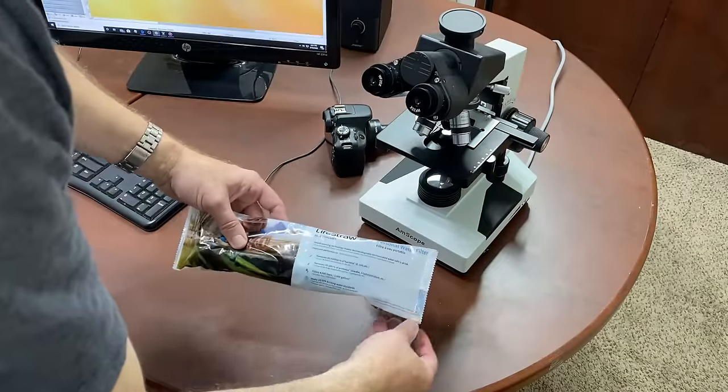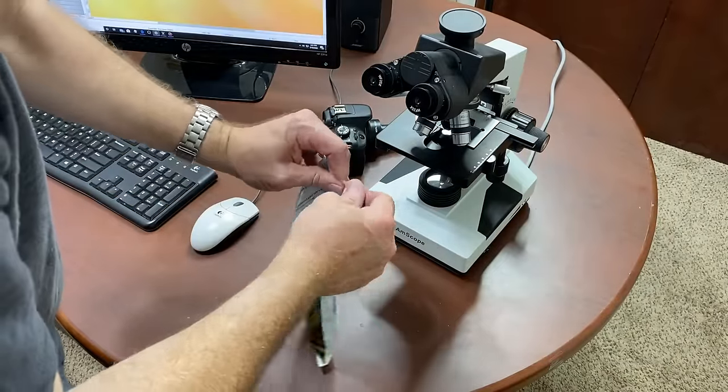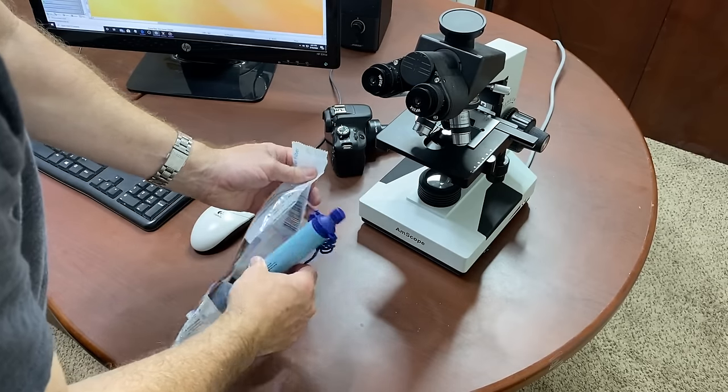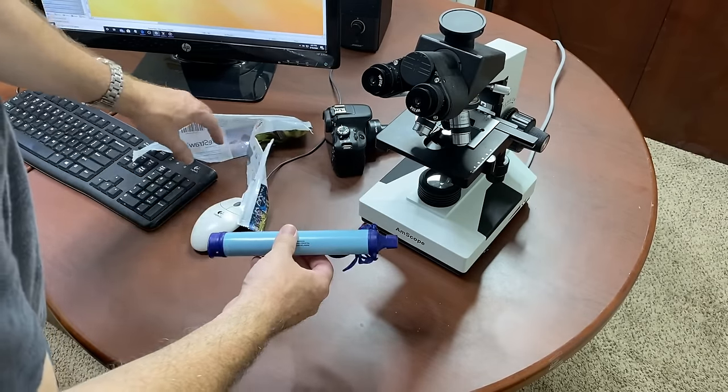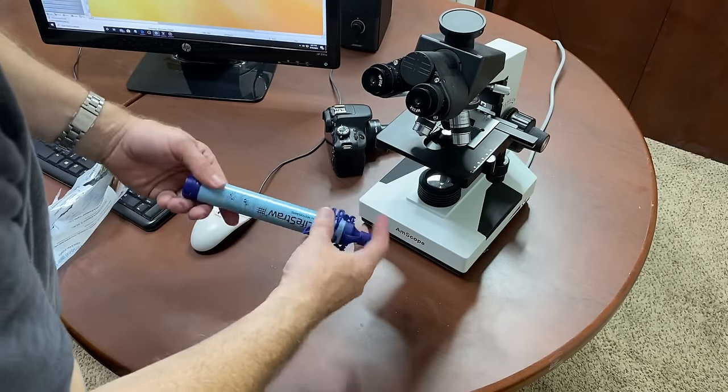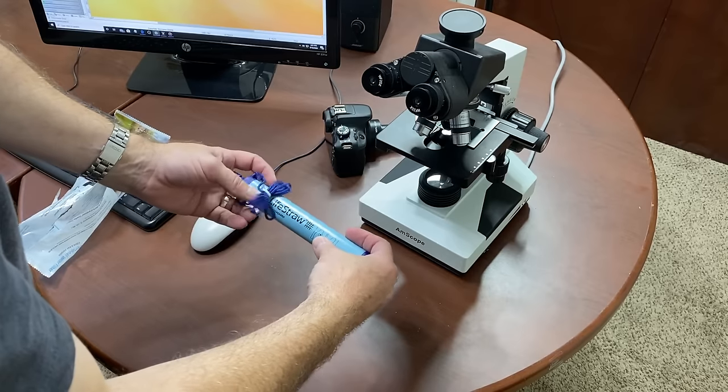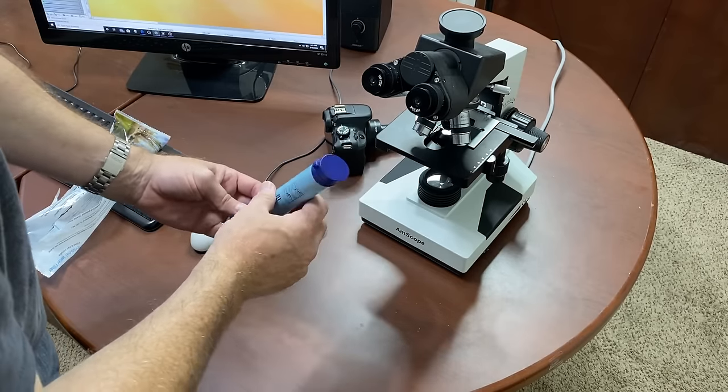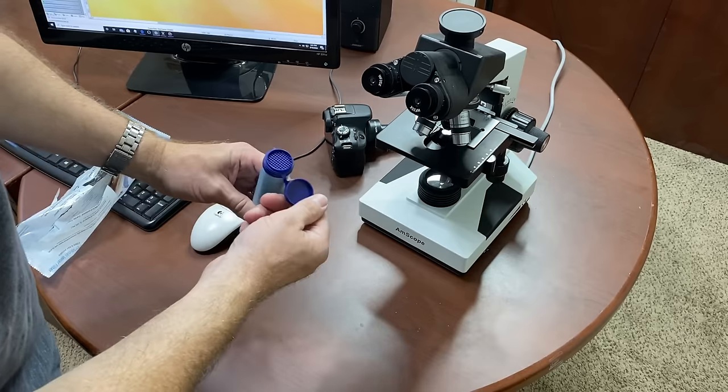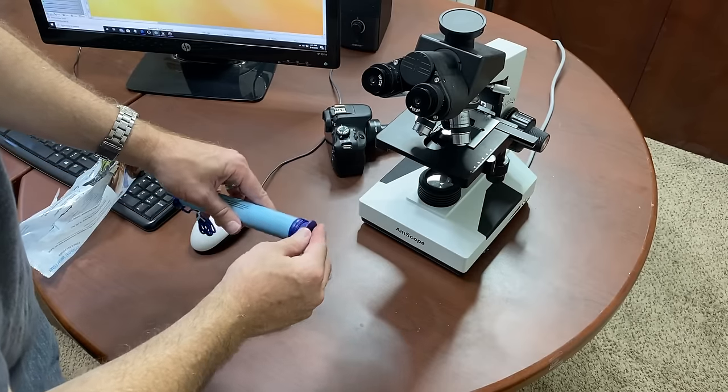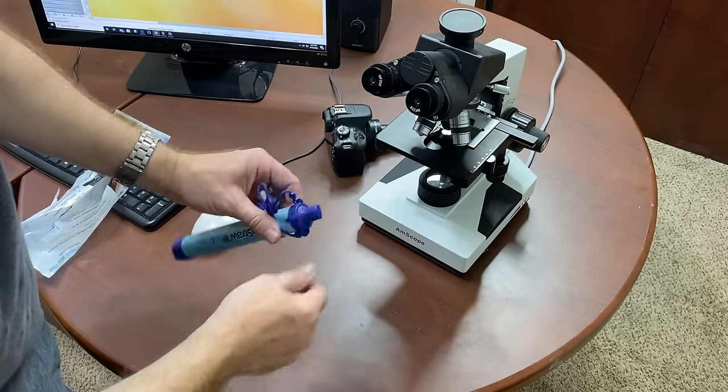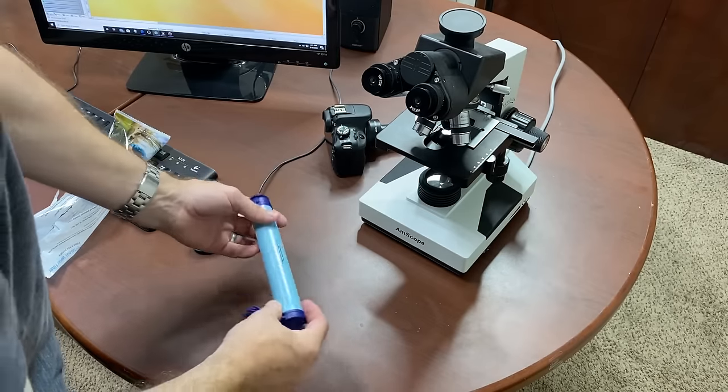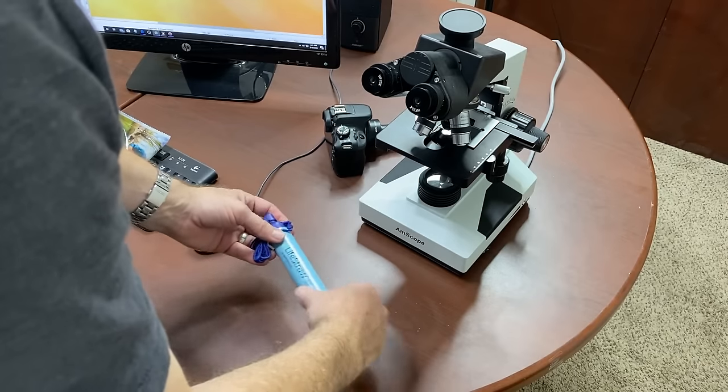I'm going to unpackage the filter here. This is an overview from LifeStraw's website. LifeStraw's membrane microfilters are made of hollow fiber membrane technology, a similar technology used in kidney dialysis. These membranes are made of small straws that contain microscopic pores of 0.2 microns in diameter. Dirty water enters one side of the straws and clean water passes through the pores while bacteria, parasites, microplastics, dirt, and other forms of turbidity are blocked and unable to pass through because they're too large.